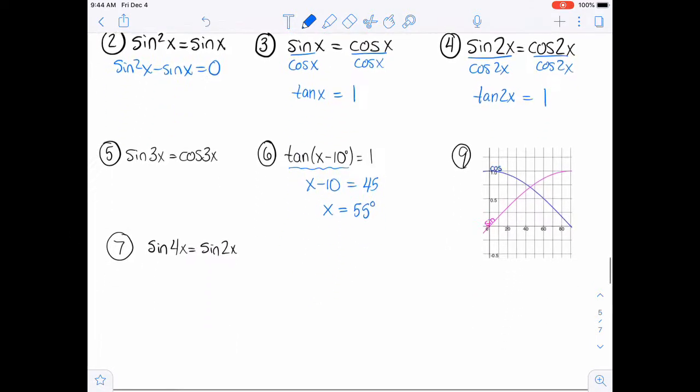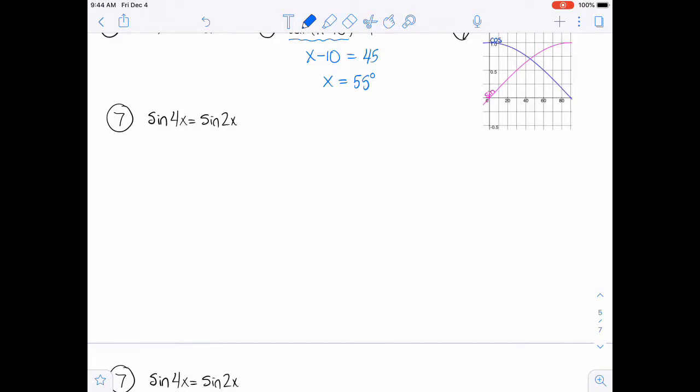Alright, let's do this number 7 here. So we have the sine of 4x equals the sine of 2x. And so we don't have just x's and we don't have just 2x's. But what we can do is write this as the sine of 2 times 2x. And so then we have 2x and 2x. And we're going to treat that 2x as a double angle. So then we have a double angle formula. So we would have 2 sine 2x cosine 2x equals sine 2x.